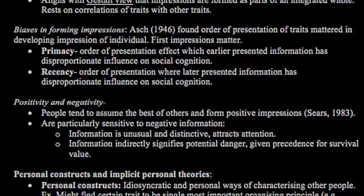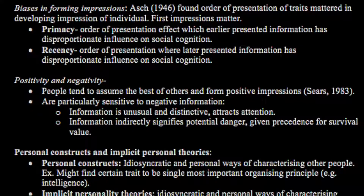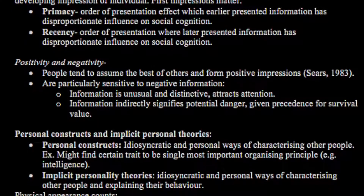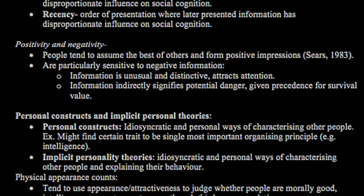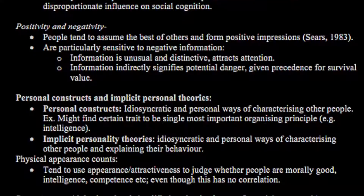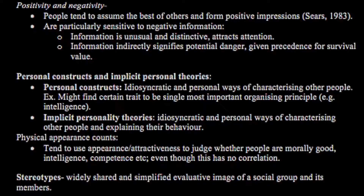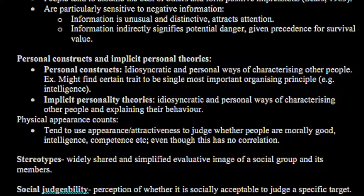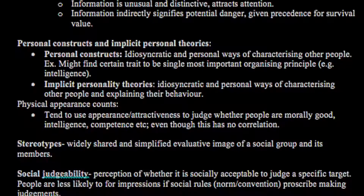Positivity and negativity: people tend to assume the best of others and form positive impressions, according to Sears 1983, but are particularly sensitive to negative information. Information that is unusual and distinctive attracts attention; information that indirectly signifies potential danger is given precedence for survival value. Personal constructs are idiosyncratic and personal ways of characterising other people — for example, finding a certain trait like intelligence to be the single most important organising principle. There are also implicit personality theories, which are idiosyncratic personal ways of characterising others and explaining their behaviour. Physical appearance also counts.